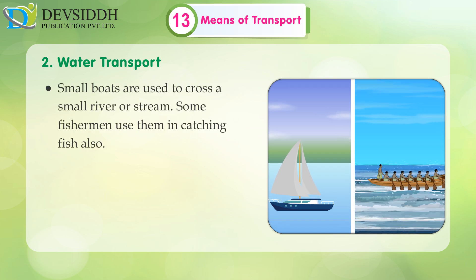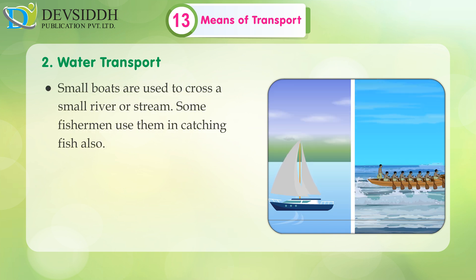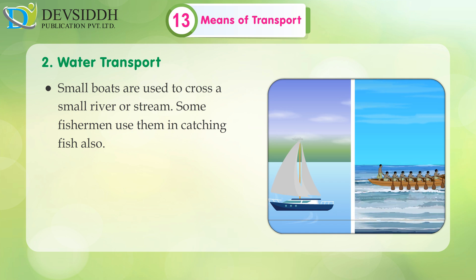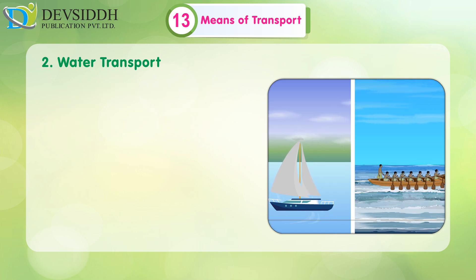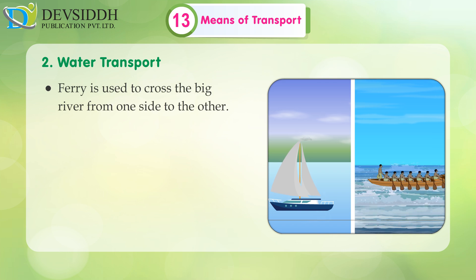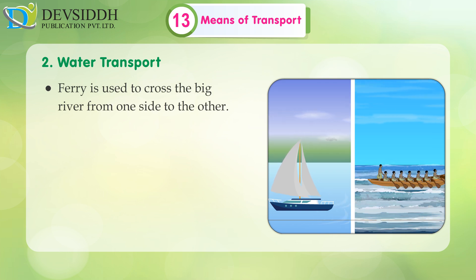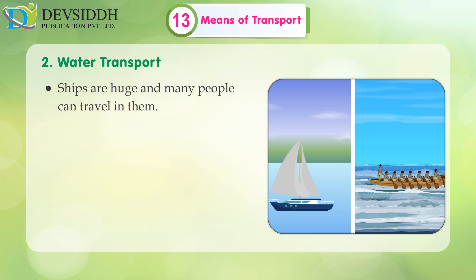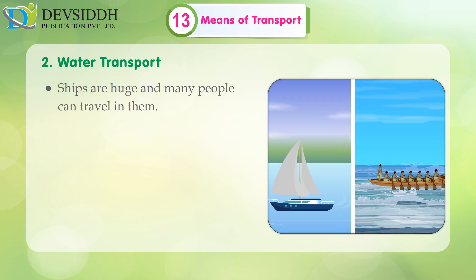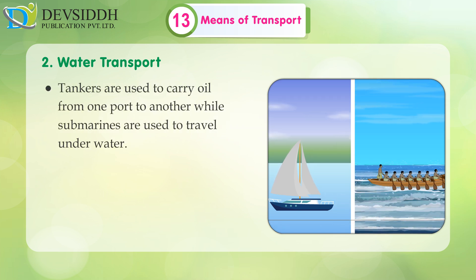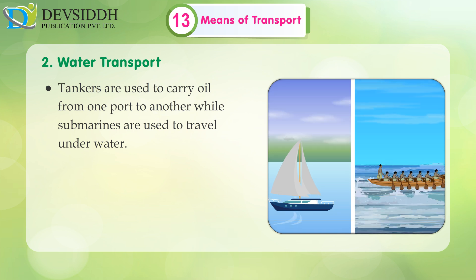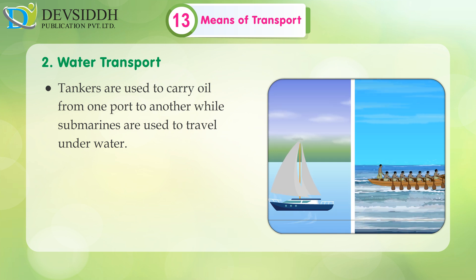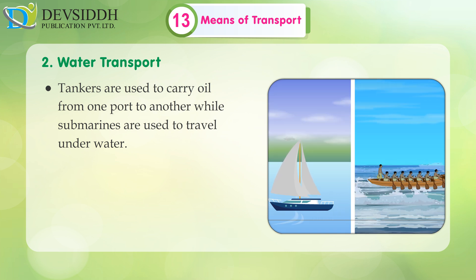Small boats are used to cross a small river or stream. Some fishermen use them for catching fish also. A ferry is used to cross a big river from one side to the other. Ships are huge and many people can travel in them. Tankers are used to carry oil from one port to another, while submarines are used to travel underwater.